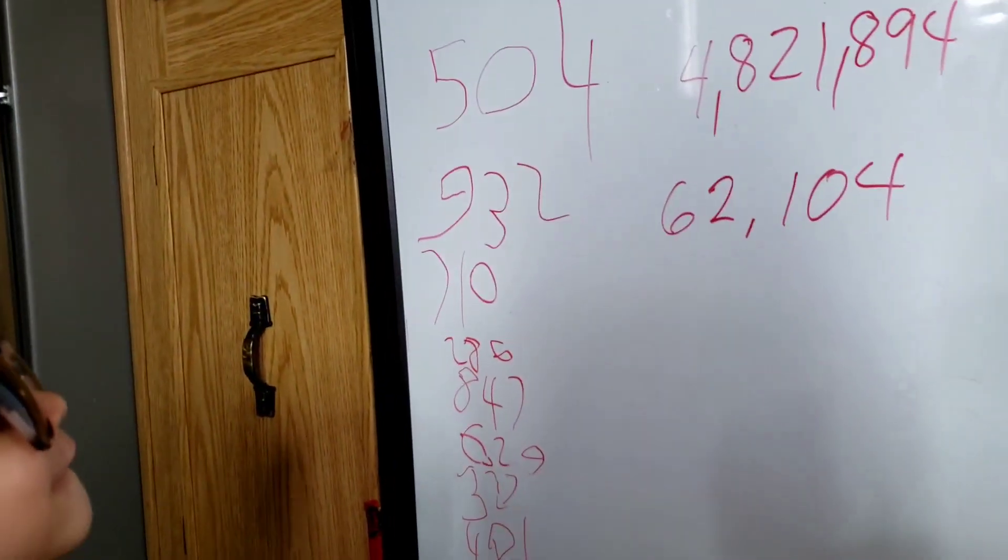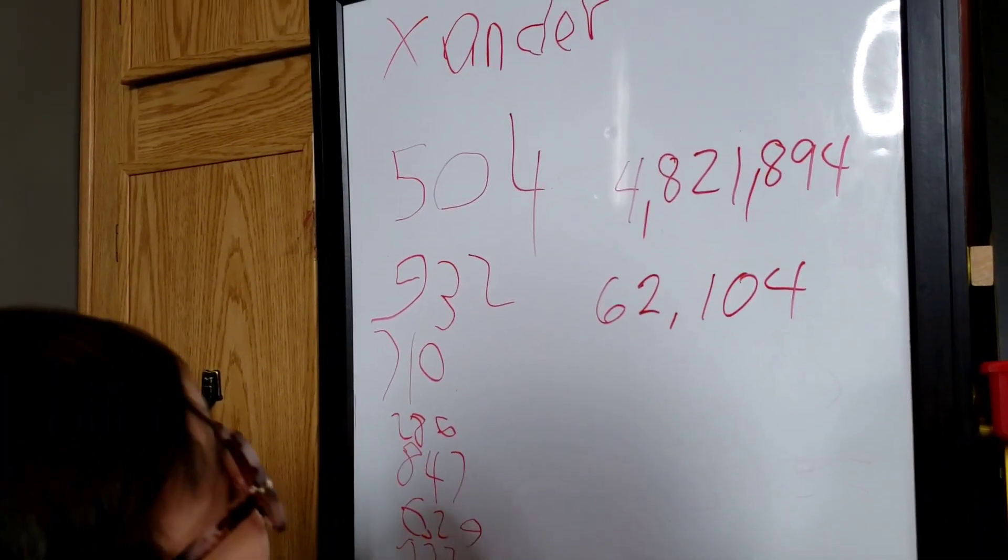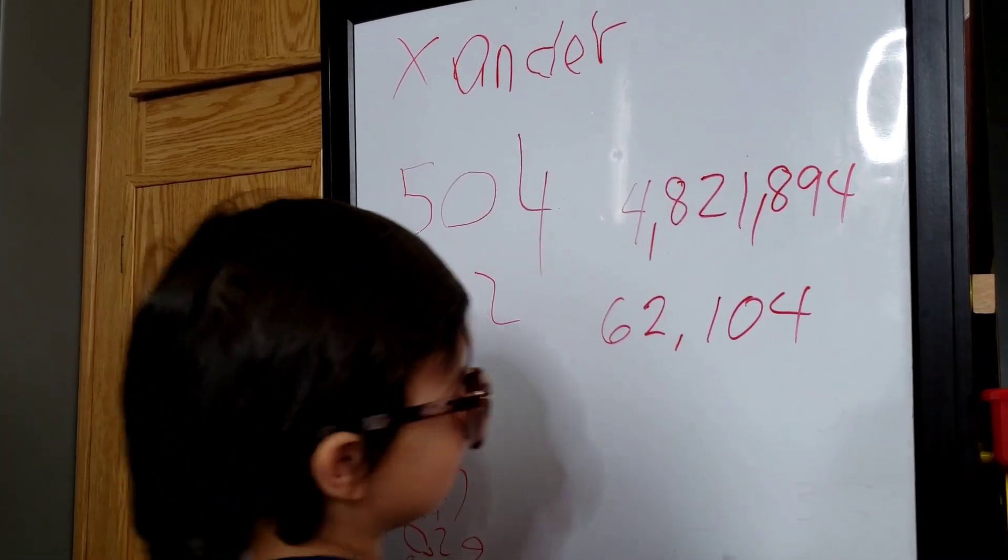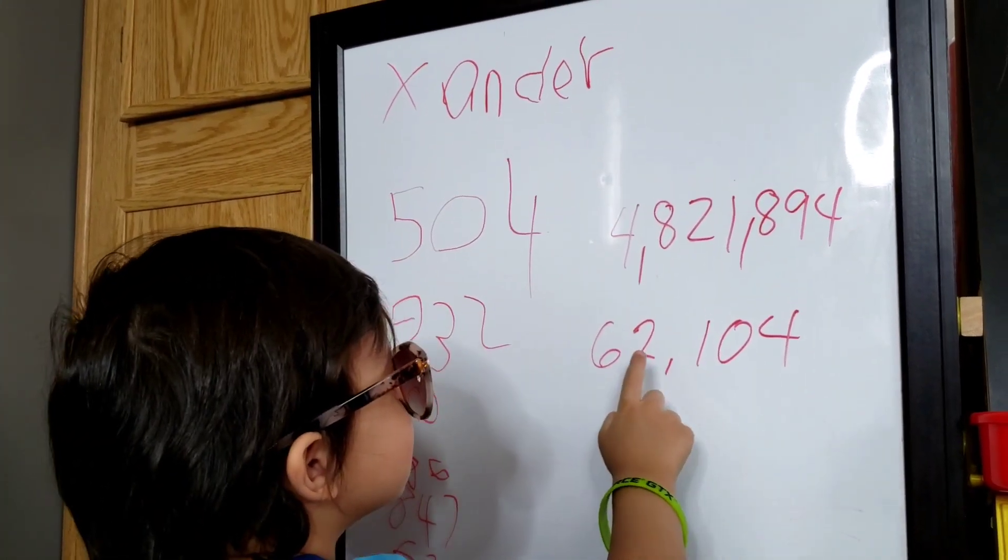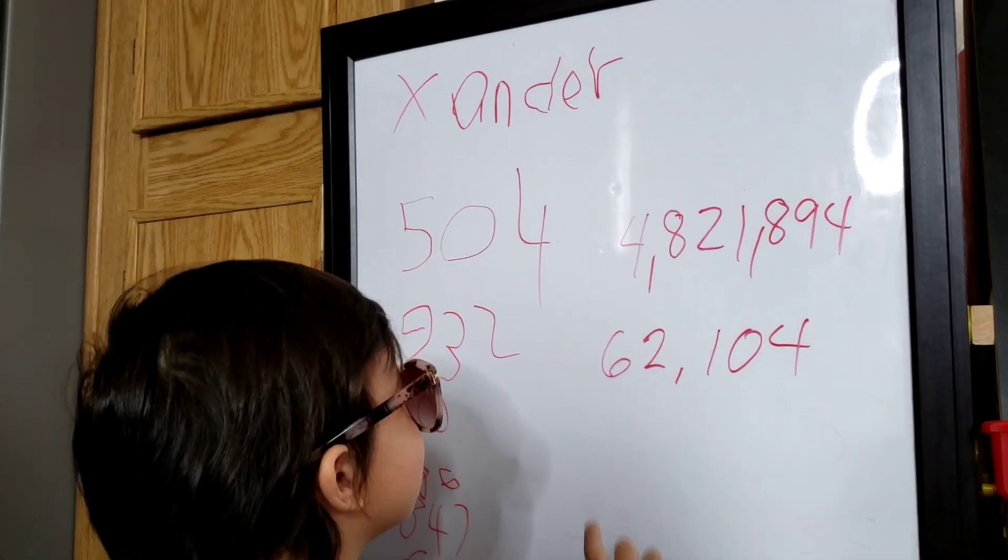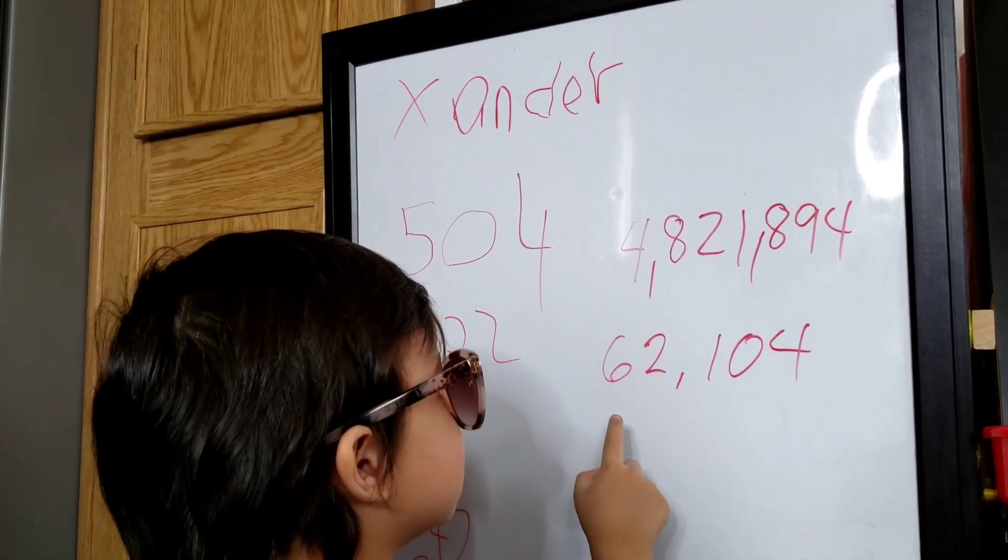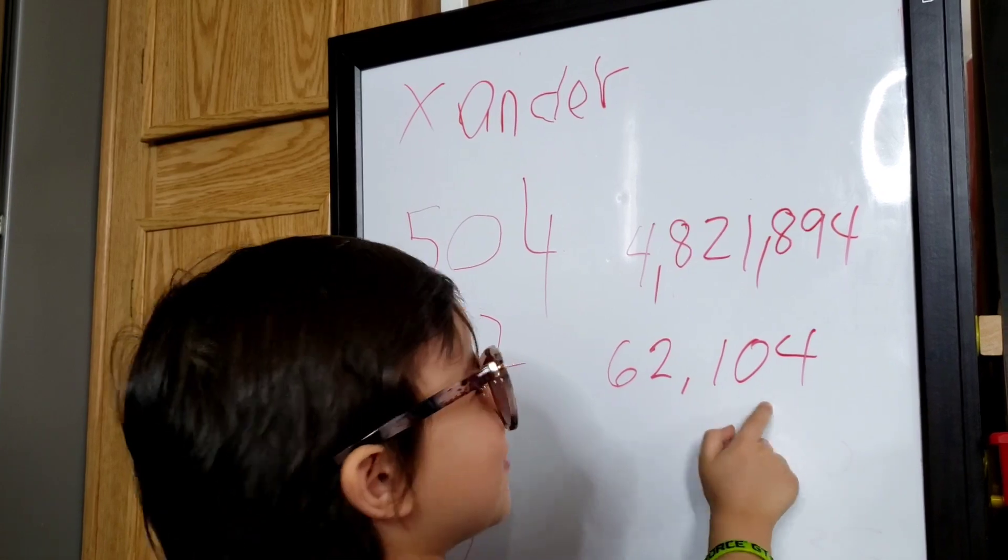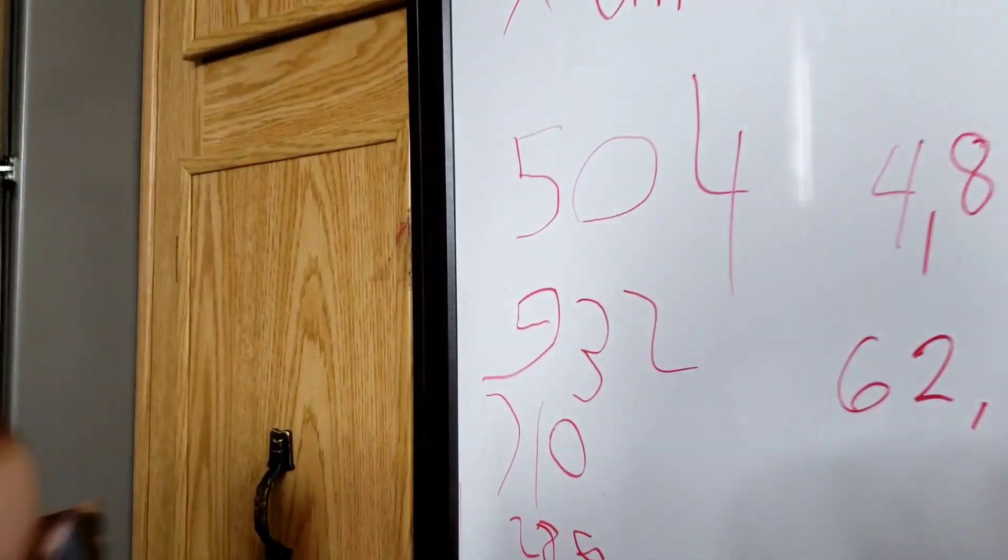What about this? Okay. Can you read that? That's 1, 10, 100, 1,000, 10,000. Okay. Can you read it? 62,104. Very good.